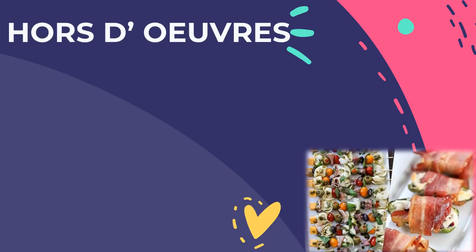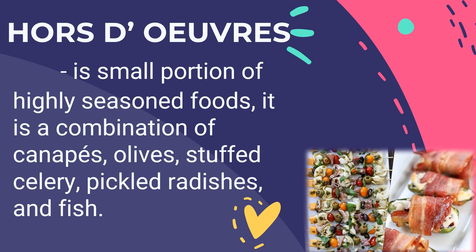The second classification is hors d'oeuvres — a small portion of highly seasoned foods. It is a combination of canapé, olives, stuffed celery, pickled radishes, and fish. Hors d'oeuvres are served on individual plates when guests are seated, or simply placed on a platter and passed around. They are served either cold or hot — small one or two-bite items served before dinner, usually accompanied by cocktails. In general, an hors d'oeuvre is served before a meal while an appetizer is part of the meal.